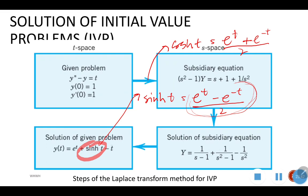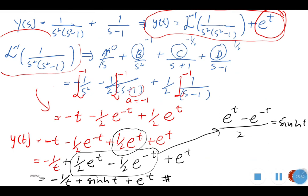Looking at our answer: we can factor and combine the exponential terms. We have 1/2 e to the power of T minus 1/2 e to the power of negative T, which equals (e to the power of T minus e to the power of negative T) over 2, which is exactly sinh(T). So our final answer is Y(T) equals negative T plus sinh(T) plus e to the power of T, which matches the answer shown on the slide — it is just a matter of the ordering of terms.